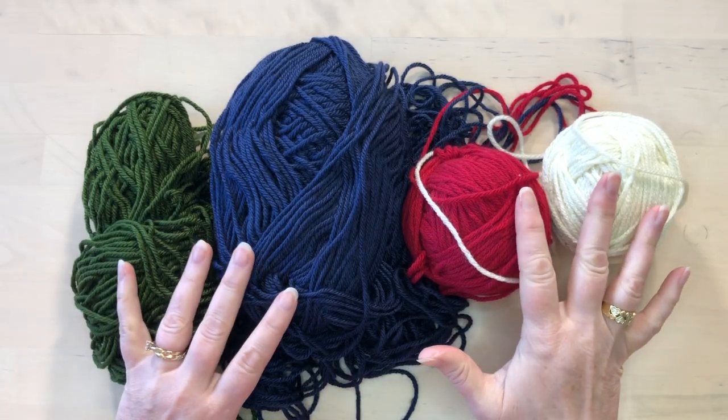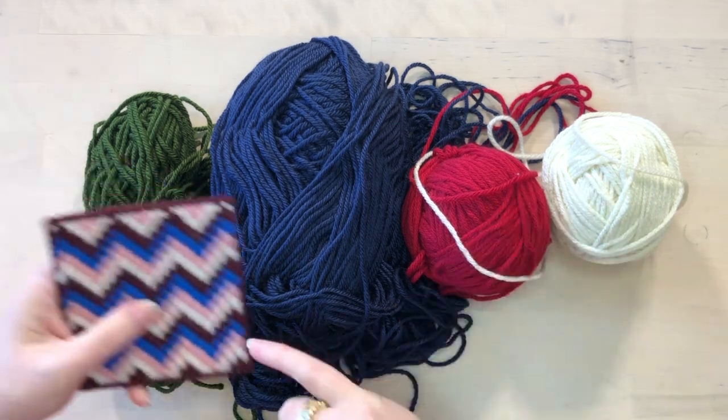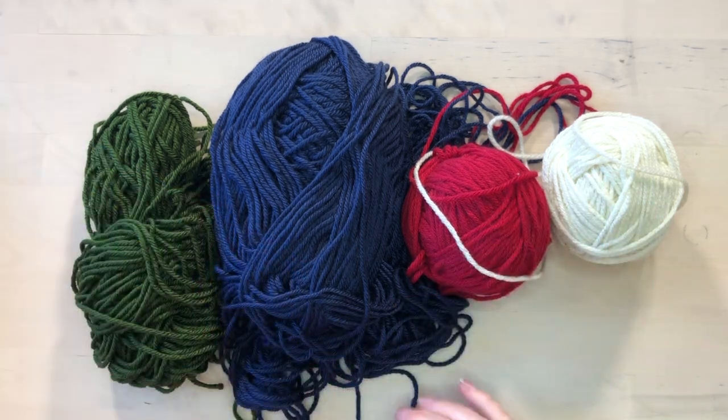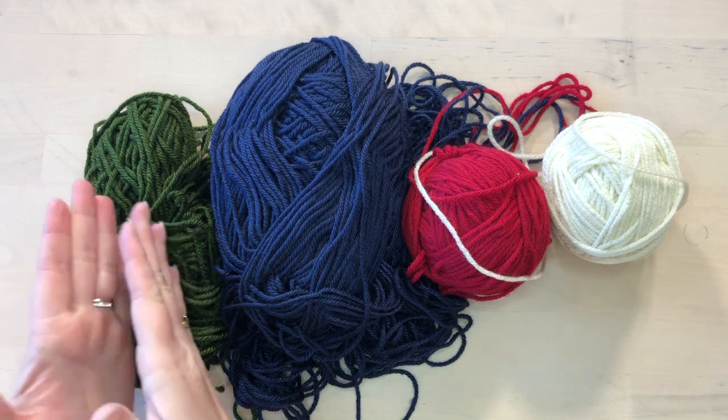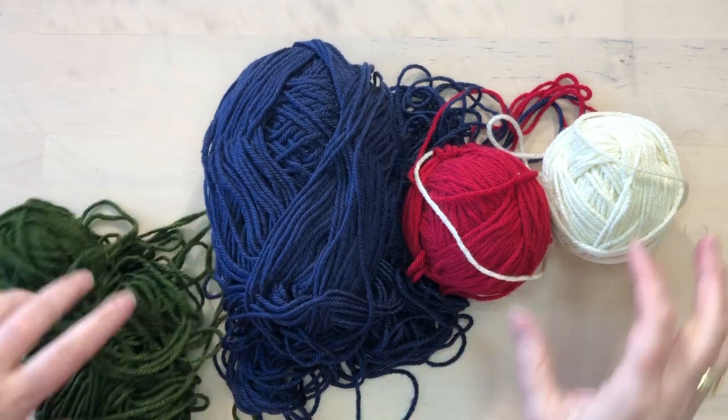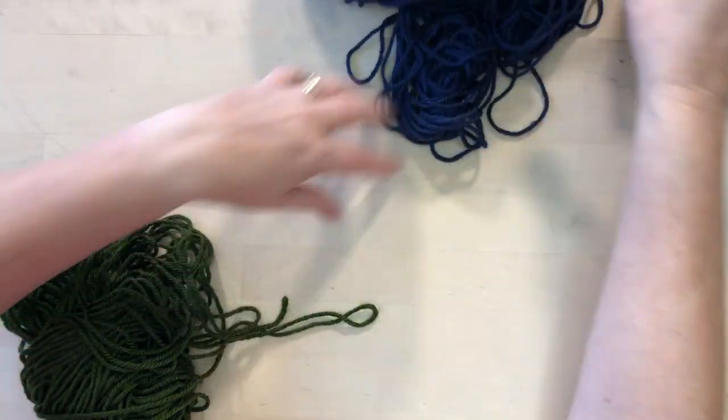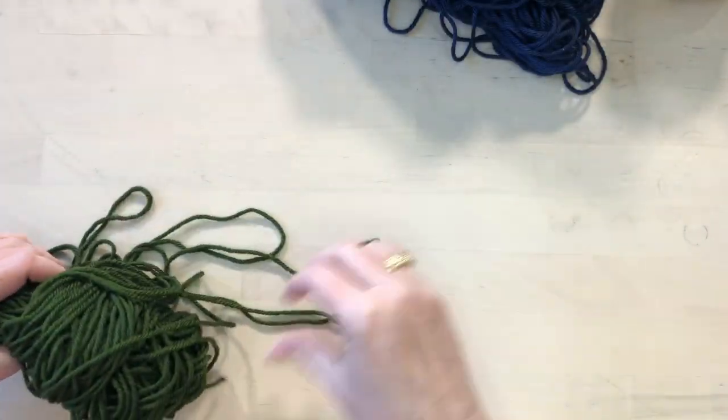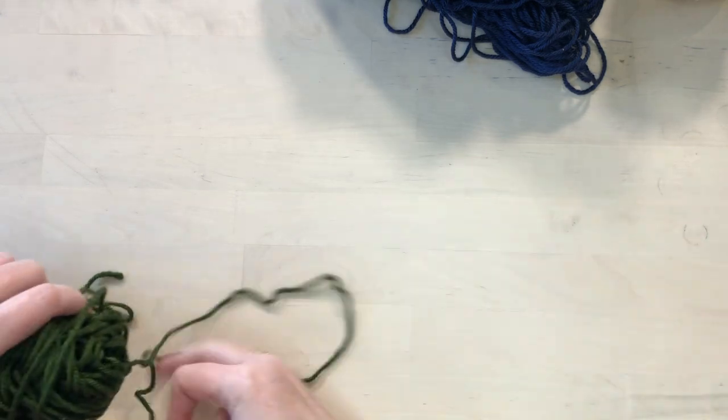So when you've chosen your colors you need to decide what order the lines are going to go in. So I think I'm going to use this order: green, blue, red, white, and then it will be repeating. So I'm going to start with the green and I'll put those aside. And you're going to take a strand and it's going to be probably longer than you would normally use for hand stitching.